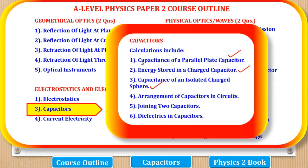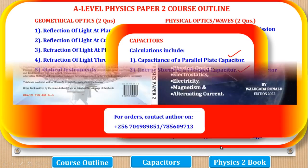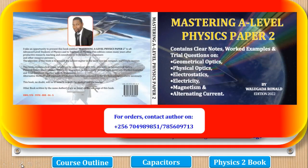Under capacitors, we already covered capacitance of a parallel plate capacitor and energy stored in a charged capacitor. Now we are on the third part, capacitance of an isolated charged sphere. The complete notes are available in the book called Mastering A-level Physics Paper 2, which contains clear notes, worked examples, and practice questions on all parts. On this YouTube channel we focus on the worked examples. If you need a copy, contact the author on the provided contacts.